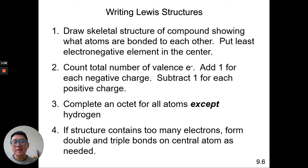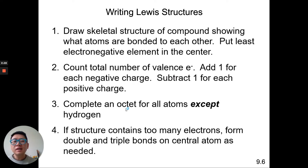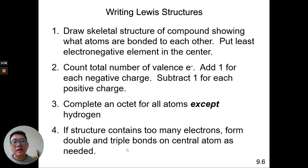If it's a negatively charged ion, say negative two, we add two dots total to the whole molecule. If it's positive, we subtract a dot for every positive charge — so for a plus two ion, we remove two dots. Then we complete the octet rule for all atoms, which is eight electrons, except hydrogen and helium which only need two. If the structure contains too many electrons, form double and triple bonds to the center atom as needed.